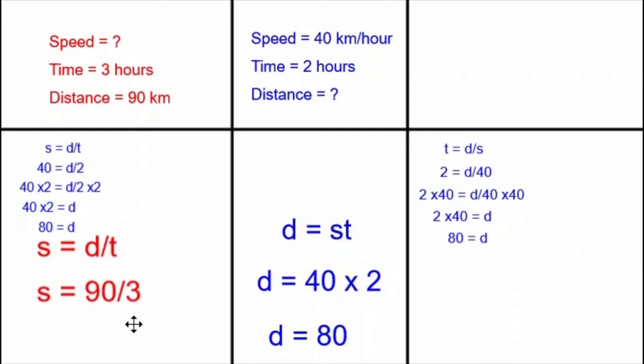And then I divide. 90 divided by 3 is 30. The answer is 30 kilometers per hour. And yes, this version of the formula was really fast and easy to use.